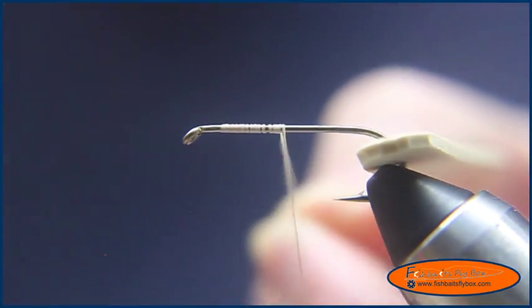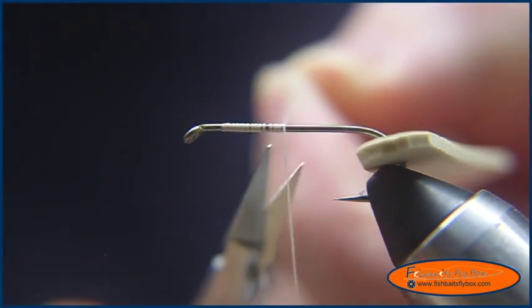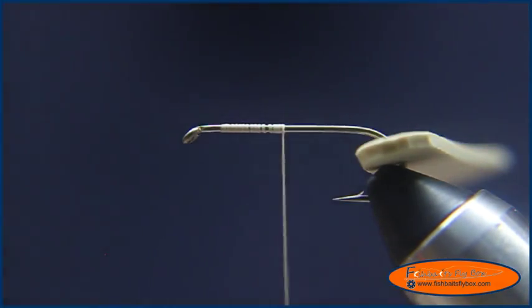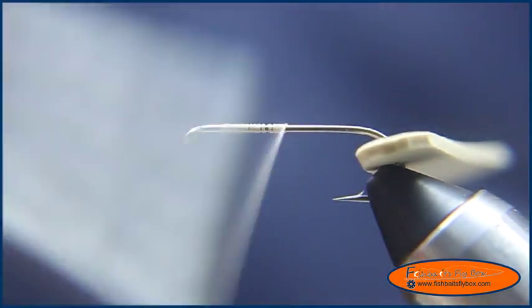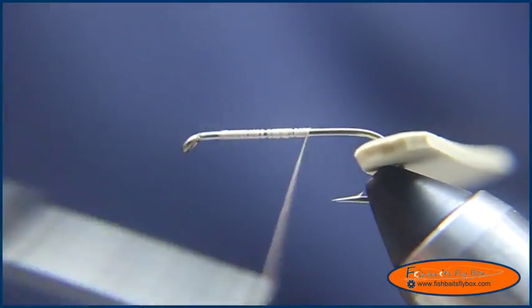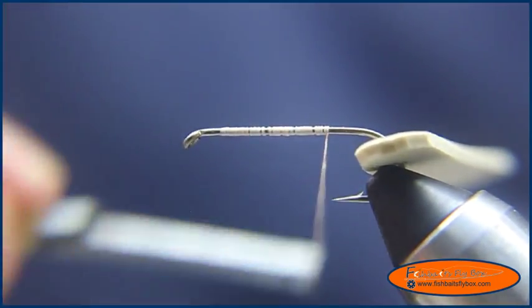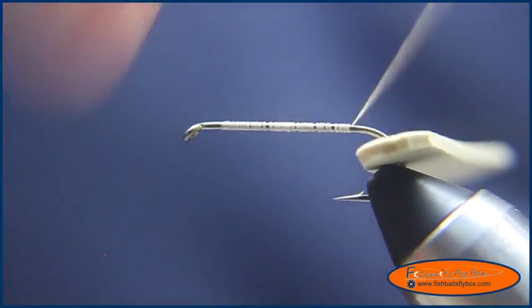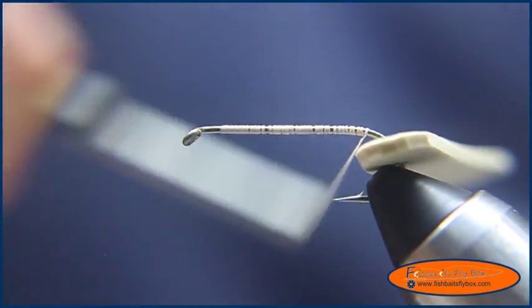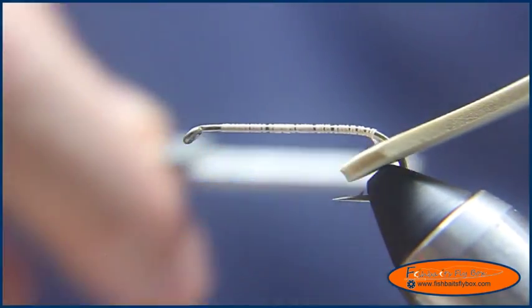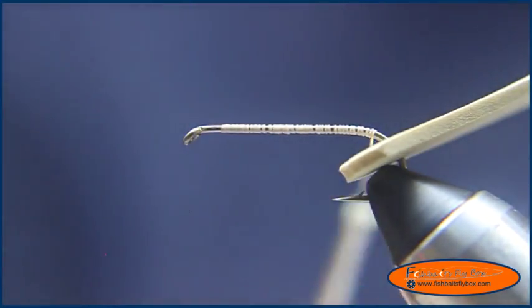What I've got here is 3-0 tan. You want a heavier thread, because you've got some cinching down to do on foam and elk hair. Okay, so I'm at that point.